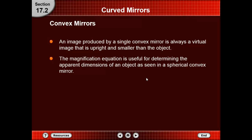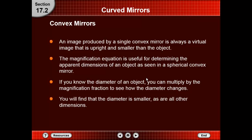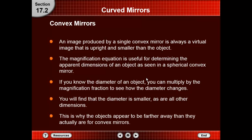The magnification equation is useful for determining the apparent dimensions of an object as seen in the spherical convex mirror. If you know the diameter of an object, you can multiply by the magnification fraction to see how the diameter changes. You will find that the diameter is smaller, as are all other dimensions. This is why the object appears to be farther away than it actually is for convex mirrors.